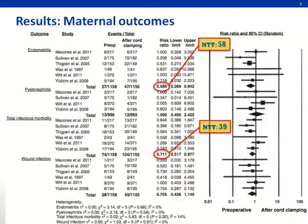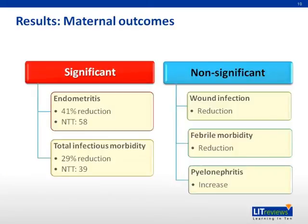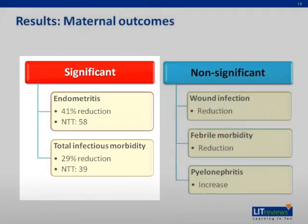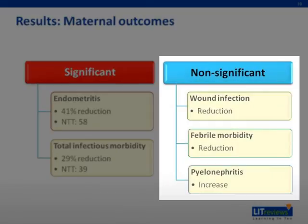The NNT has been calculated for both of these outcomes. For endometritis, there is a 41% reduction in risk when antibiotics are administered preoperatively compared to intraoperatively, and the number needed to treat to achieve this reduction is 58. For total infectious morbidity, there is a lower risk reduction of 29%, but the number needed to treat is similarly lower at 39. There are also non-significant results for wound infection and febrile morbidity, and a non-significant increase in the rate of pyelonephritis.